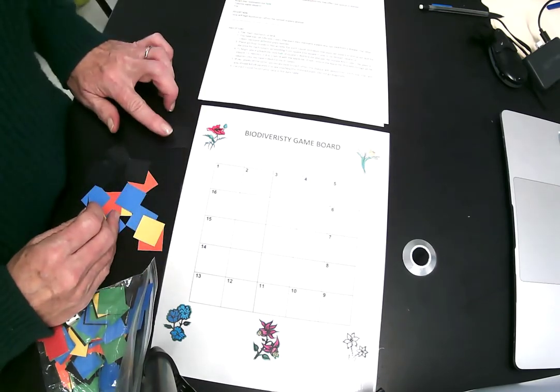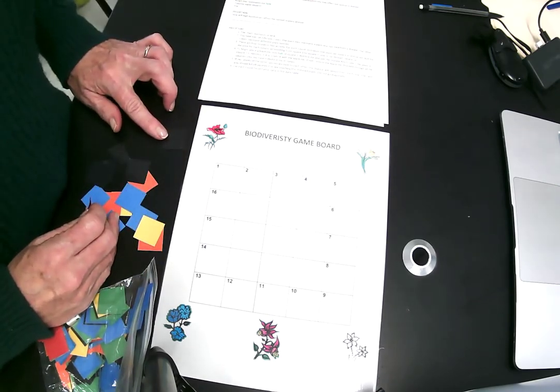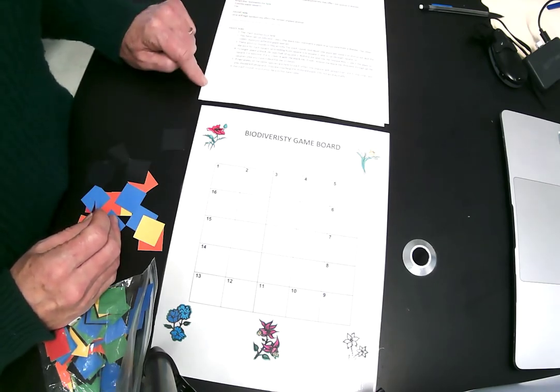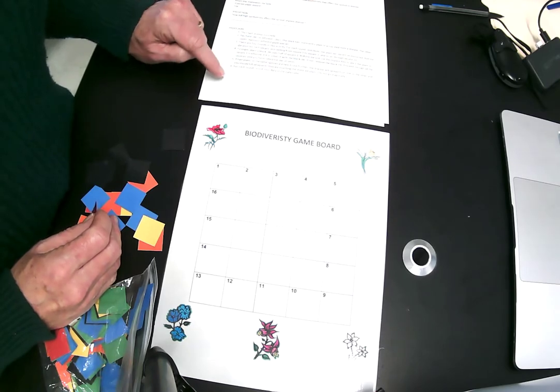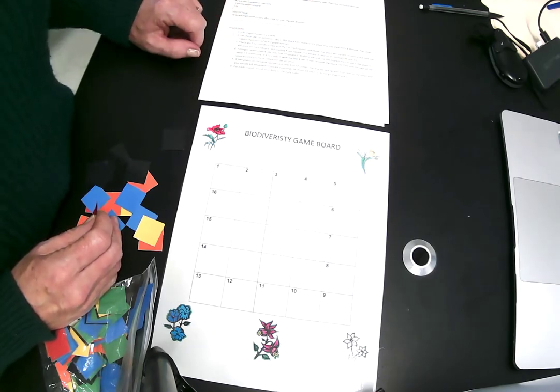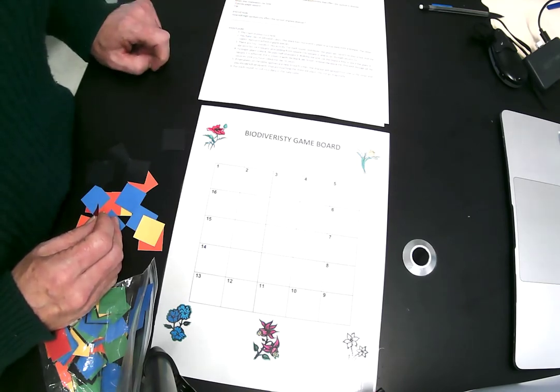Okay, the black tiles represent disease, disease that spreads through a specific species. So red flowers get red flower disease, blue flowers get blue flower disease. They don't share the same disease. So if a disease infects one species, it only kills that species. Got it? Okay, good.